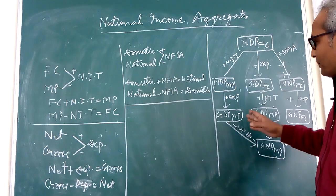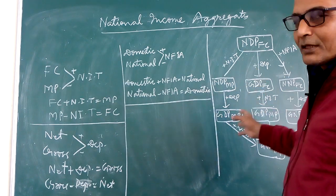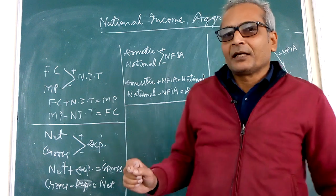FC, NDP, MP, GDP, MP and etc. And how one can convert one aggregate into another.